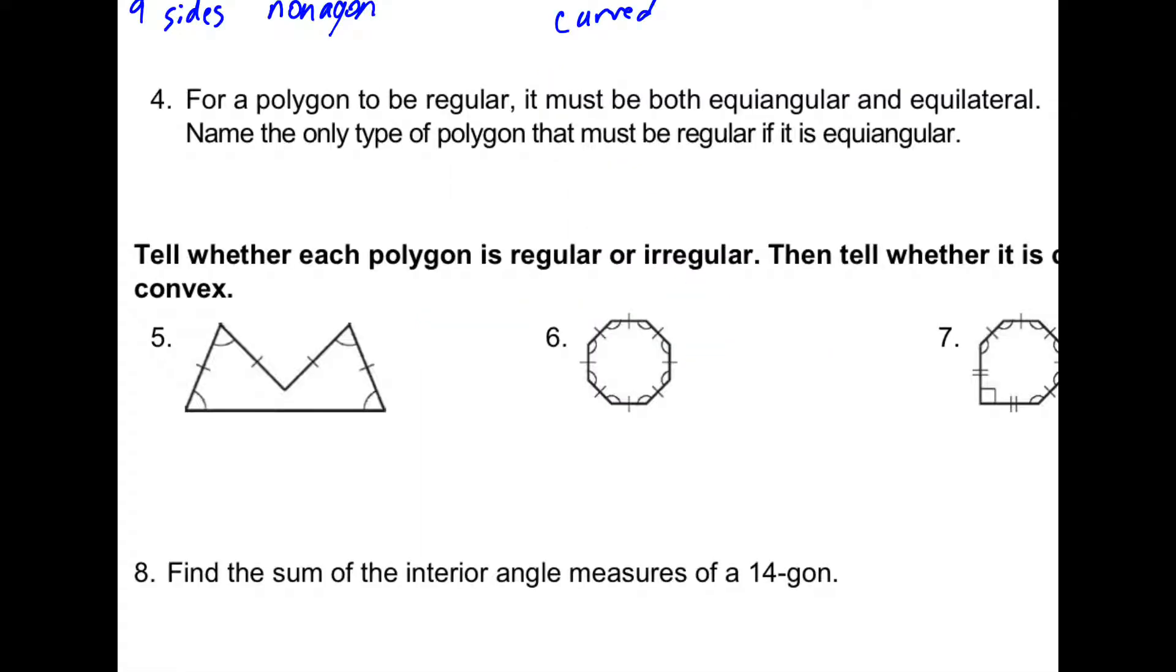For number four, for a polygon to be regular, it must both be equiangular and equilateral. A triangle is the only one where if it's equiangular, it has to be equilateral.